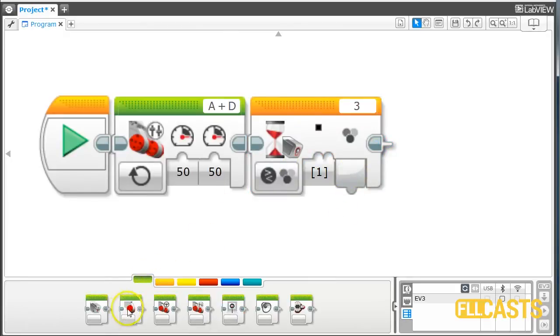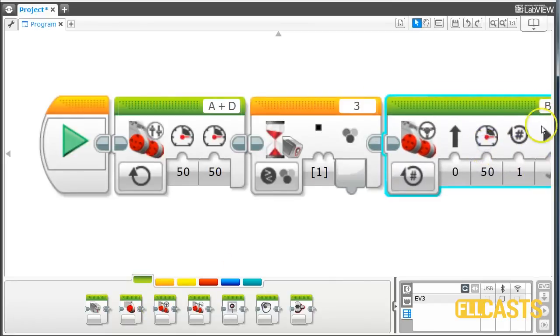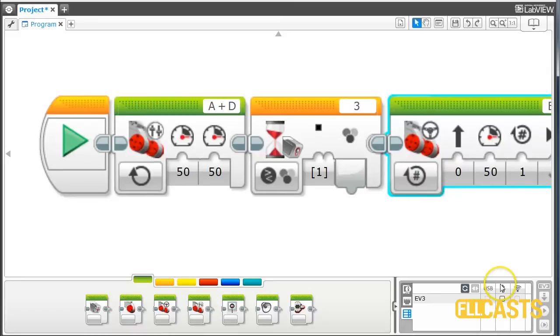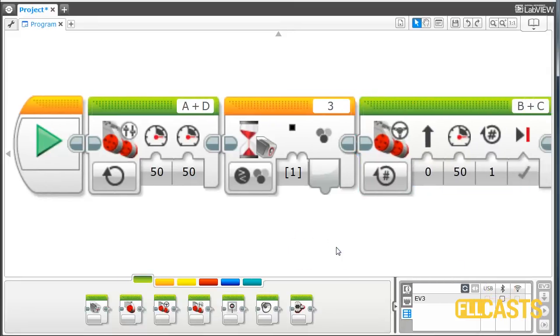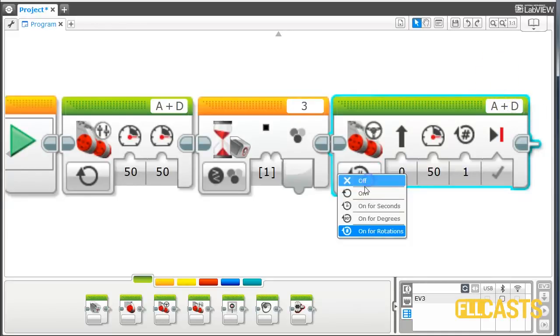And then, after we detect the line, we want to stop. We want to stop with both motors. Just so that you can see it, it's again motor A and motor D and we want to stop.